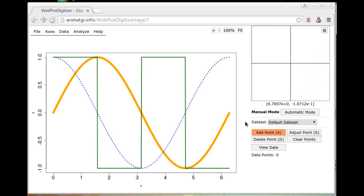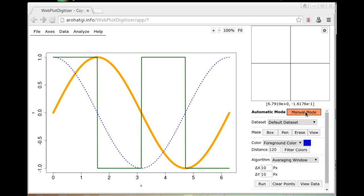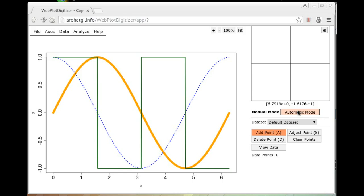Now these controls on the right are the ones you will be using for the data extraction. There are two modes of data extraction, manual and automatic. You can use the button on the top to switch between these two modes at any point. The manual mode is very straightforward. In this mode, you can add, remove, or adjust data points on an individual basis. Click on add points to start clicking on the points along the curve.